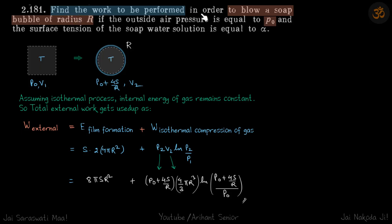Find the work to be performed in order to blow a soap bubble of radius r if the outside pressure is p₀. So we have this gas which is at p₀ in the atmosphere, and let's say its volume is v₁.